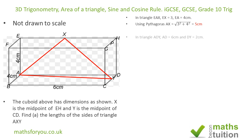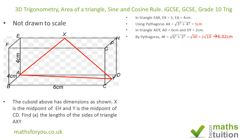Moving on, we now have to find AY. To find AY we look at this triangle strip here. AD is 6 and DY is 2, because Y is the midpoint of DC and DC is 4, which makes DY equal to 2. So to find AY, the hypotenuse of that right-angle triangle, we do the square root of 6 squared plus 2 squared, giving us the square root of 40, or 2 root 10, approximately 6.32 centimeters.